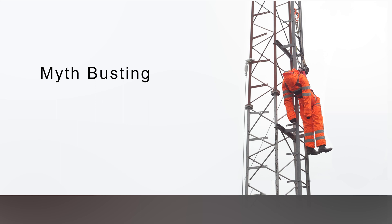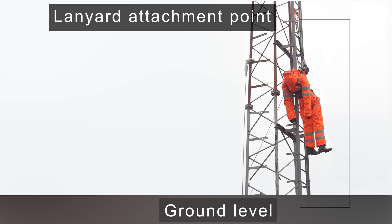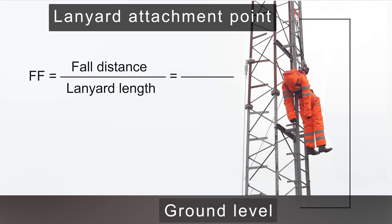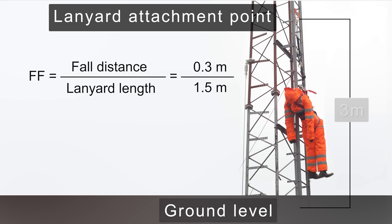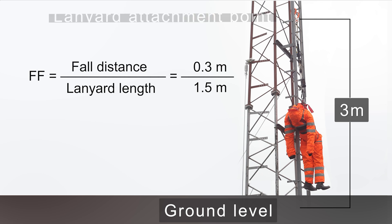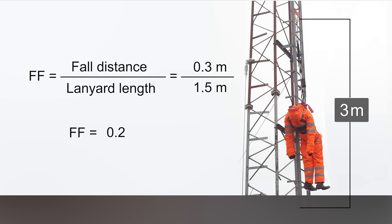Myth busting. Clearance distance requirements are always based on the worst case scenario, which is a fall factor 2. If used correctly, the calculations show that even at a height of 3 metres, shock absorbing lanyards like this can be an effective method of minimising the chance of the user hitting the ground and sustaining serious injuries.